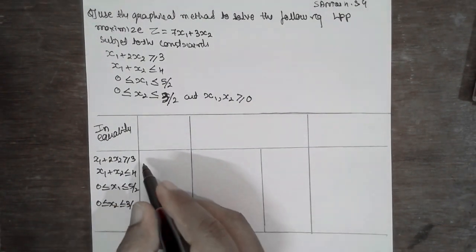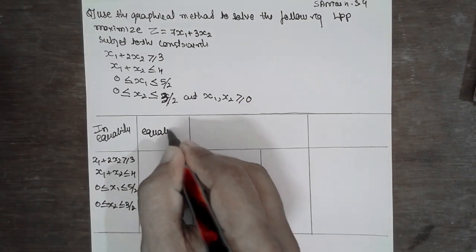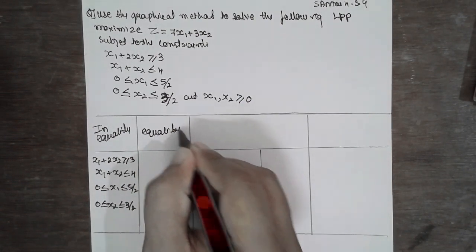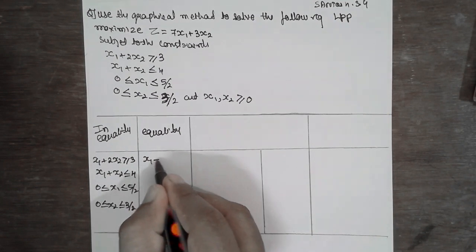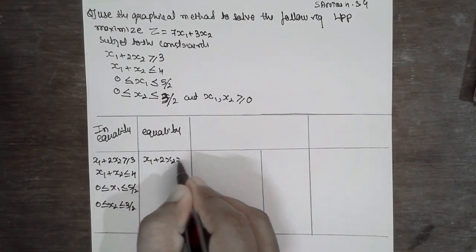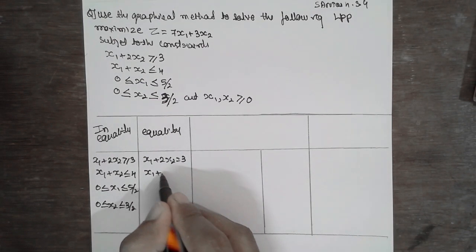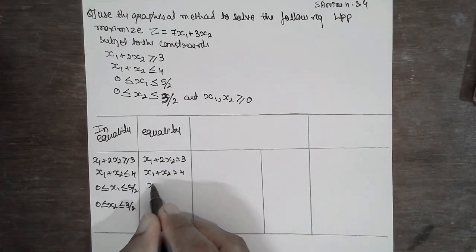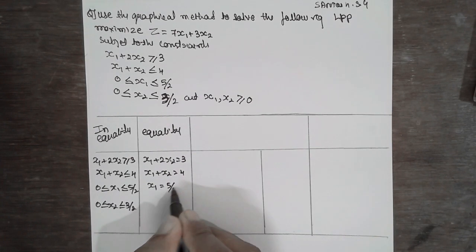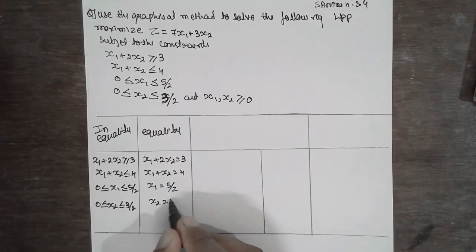Now, inequality has to be converted to equality. In the equality form, just replace the inequality sign with equals: x1 plus 2x2 equal to 3; x1 plus x2 equal to 4; x1 equal to 5/2; x2 equal to 3/2.